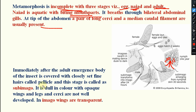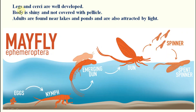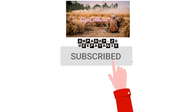Immediately after adult emergence, the body is covered with close-set fine hairs known as pellicle, and this stage is known as sub-imago. In the imago stage, legs and cerci are well developed, the body is shiny and not covered with pellicle. Adults are found near lakes and ponds and are attracted by light. The life cycle: egg → naiad → sub-imago → imago → lay eggs.